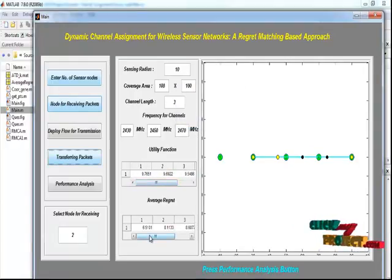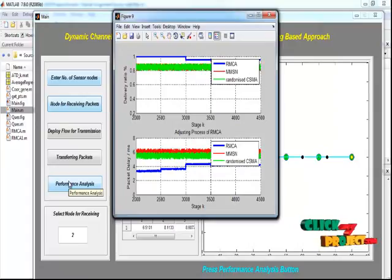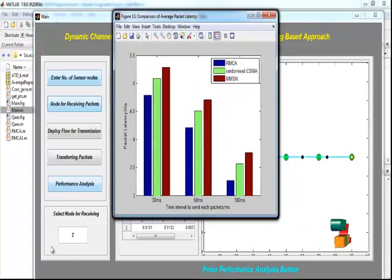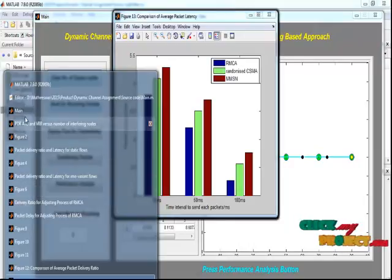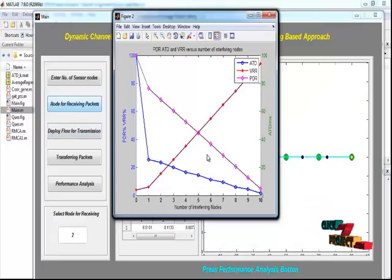Now by pressing the Performance Analysis button, the performance graph for every flow and the performance parameters: delivery ratio, packet delay, and latency. These are the values we obtain for PDR, ATD, and VRR versus interfering nodes. This is the graphical representation for PDR, ATD, VRR versus number of interfering nodes.